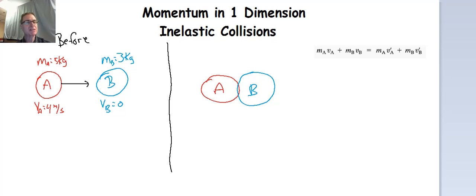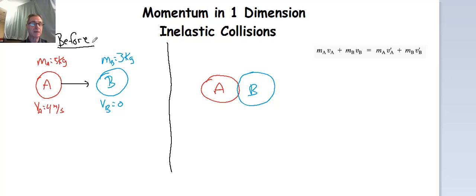Over on the left-hand side here, we have our before situation. In our before situation, we've got object A, which has a mass of 5 kilograms and is moving to the right with a velocity of 4 meters per second. Object B is just sitting there — it has a mass of 3 kilograms, and initially it's got a velocity of 0. They are going to hit, they're going to collide, they're going to stick together, and then they're going to take off.